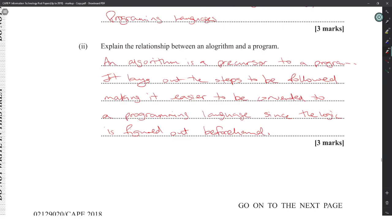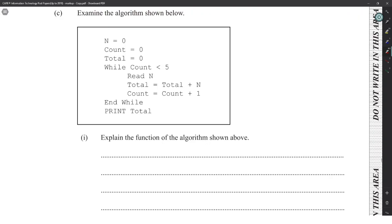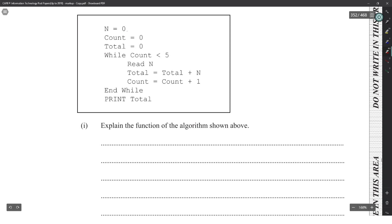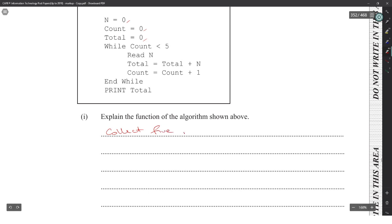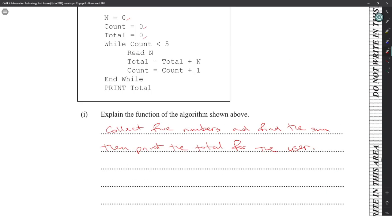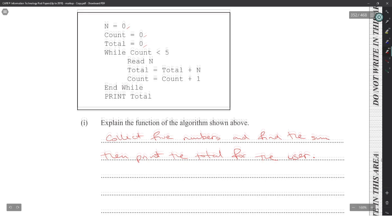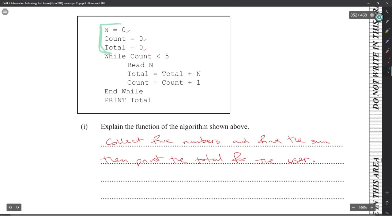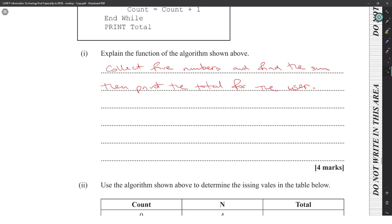Examining the algorithm shown: we start count at zero, and while count is less than five, we find the sum of five numbers and print the total. The function is: select five numbers, find their sum, then print the total for the user. You can't just recite the algorithm step by step — you have to state what it does functionally.